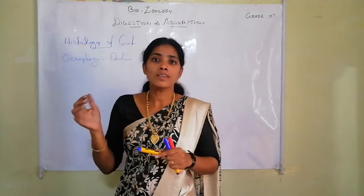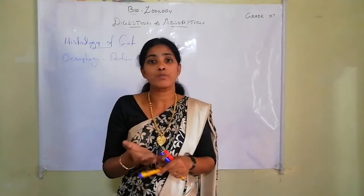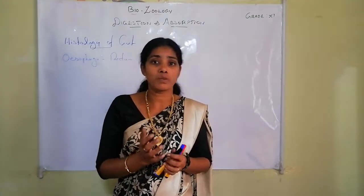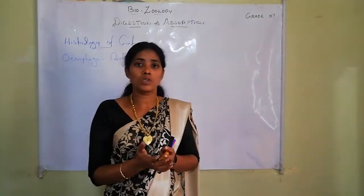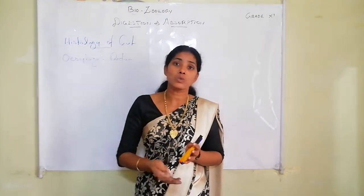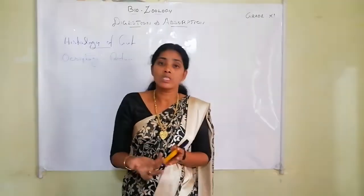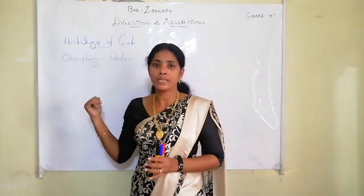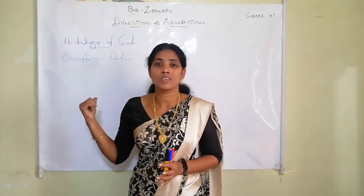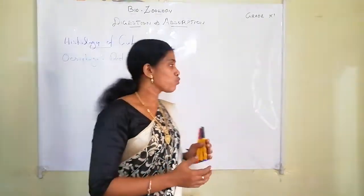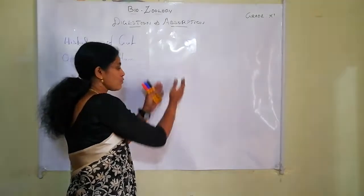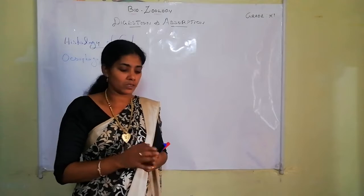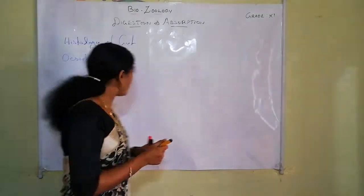Histology of gut means we are going to discuss what kind of tissues make up this gut. You may remember the tissue types: epithelial tissue, connective tissue, muscular tissue, and nervous tissue. The wall of the gut from esophagus to rectum is made up of four layers.